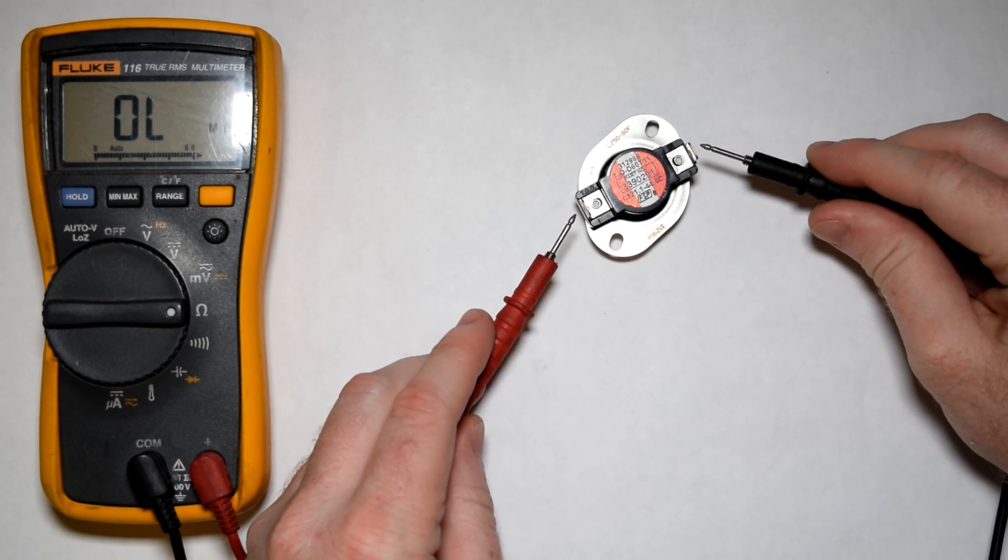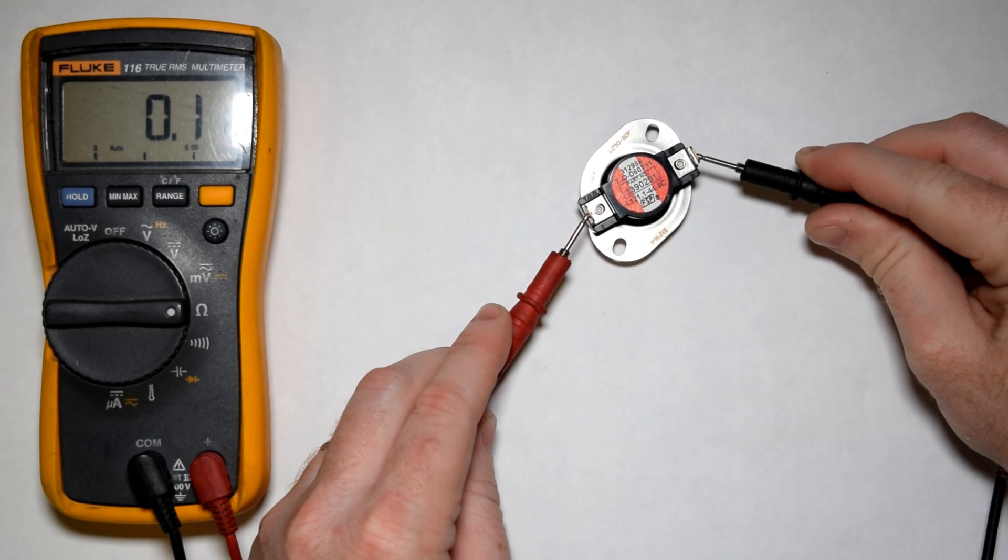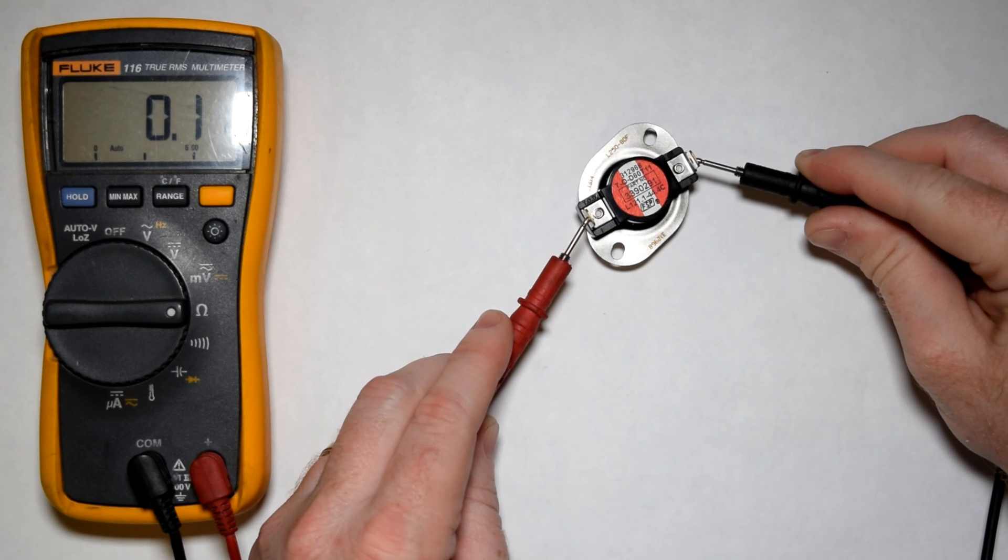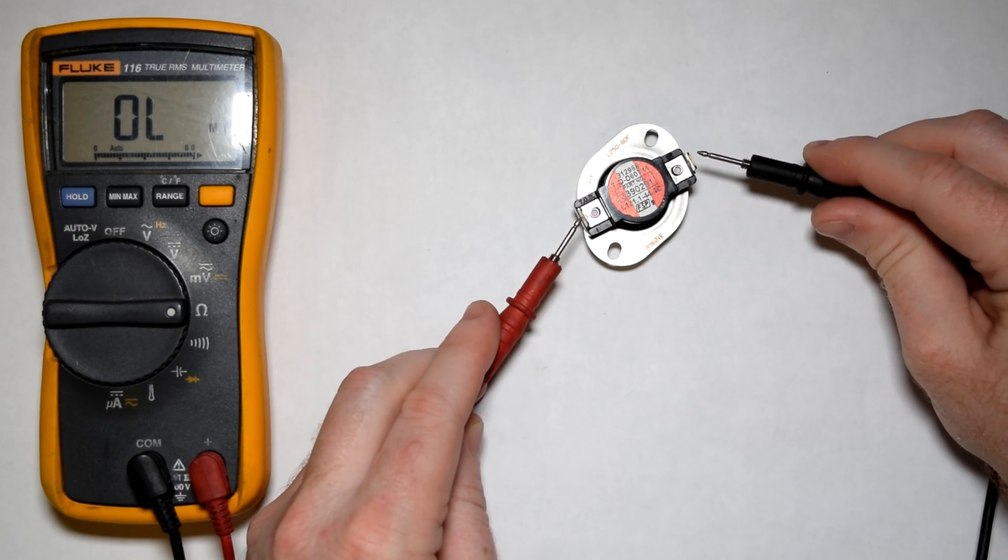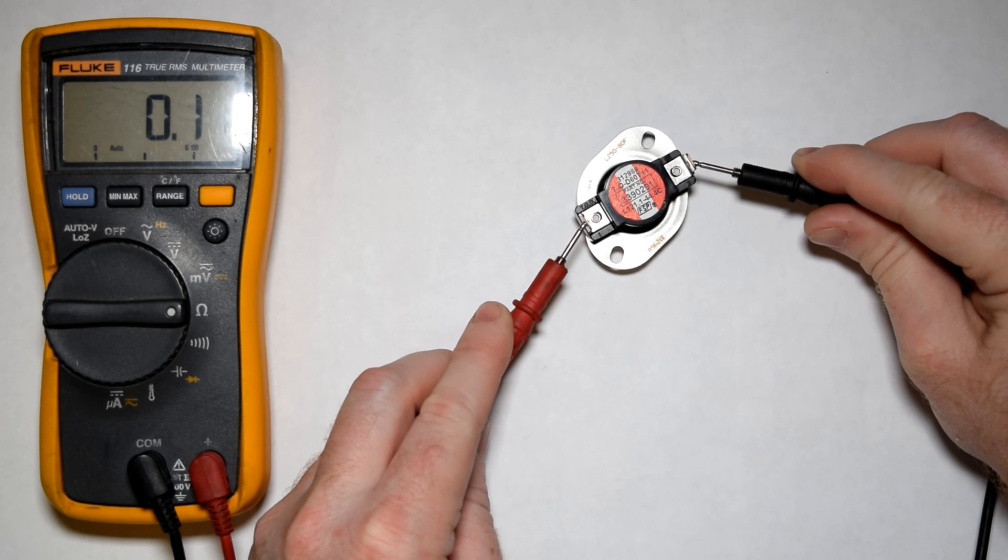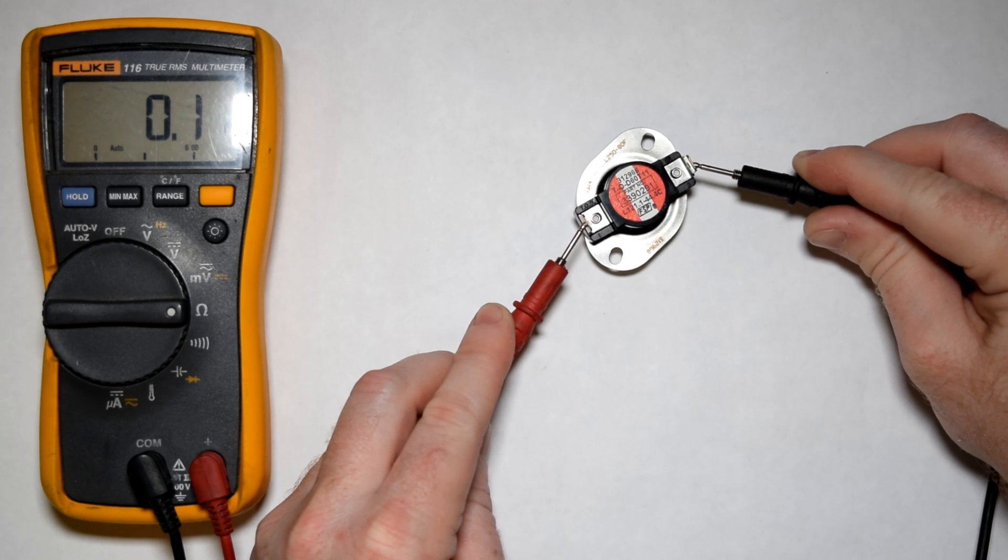Likewise, when we touch a part, obviously make sure the power is off and then the wires are unplugged from the part that you're testing. This could certainly still be installed on the appliance. But you'll see that it went from open circuit, and this is a good part. So it should show some resistance, a fairly low number. If it's a very high number, it could indicate that you have a failed part.